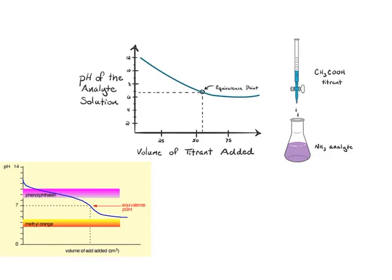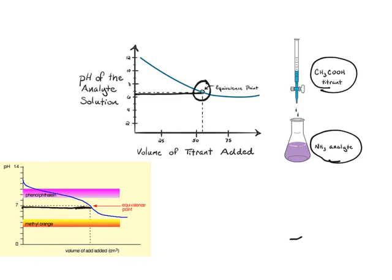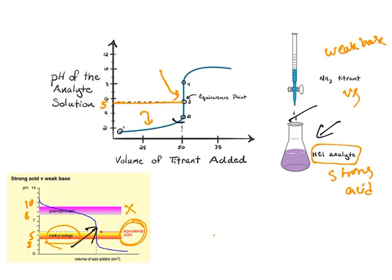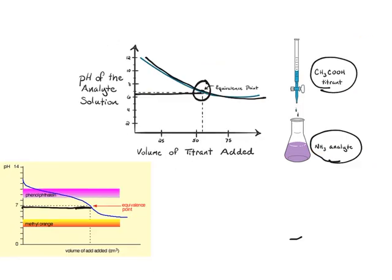The last type — weak acid versus weak base titration. The problem here is that the equivalence point does not show a sharp rise in pH; unlike the previous cases, the curve just rises gradually. Both indicators are out of their effective ranges, so neither can be used. That is why titration between a weak acid and a weak base is not carried out in practice, because there is no good indicator available.